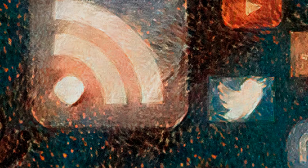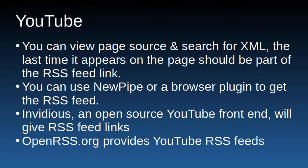For YouTube, the simplest way is to view the page source — on Windows, Linux, or Mac you just right-click and click Show Source, then search for the letters 'xml'. The last time 'xml' appears it should be a link you can copy and paste into your RSS reader to get a feed for any YouTube channel or playlist. Apps like NewPipe or browser extensions will also give you the RSS link without inspecting page source, and you can also get an RSS link from an Invidious instance or from OpenRSS.org.